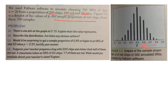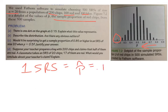Part A says there's one dot on the graph at 0.15 — explain what this value represents. That means in one of the simple random samples, p-hat equals 0.15, which means that three out of the 20 chips were red. That's all that means.